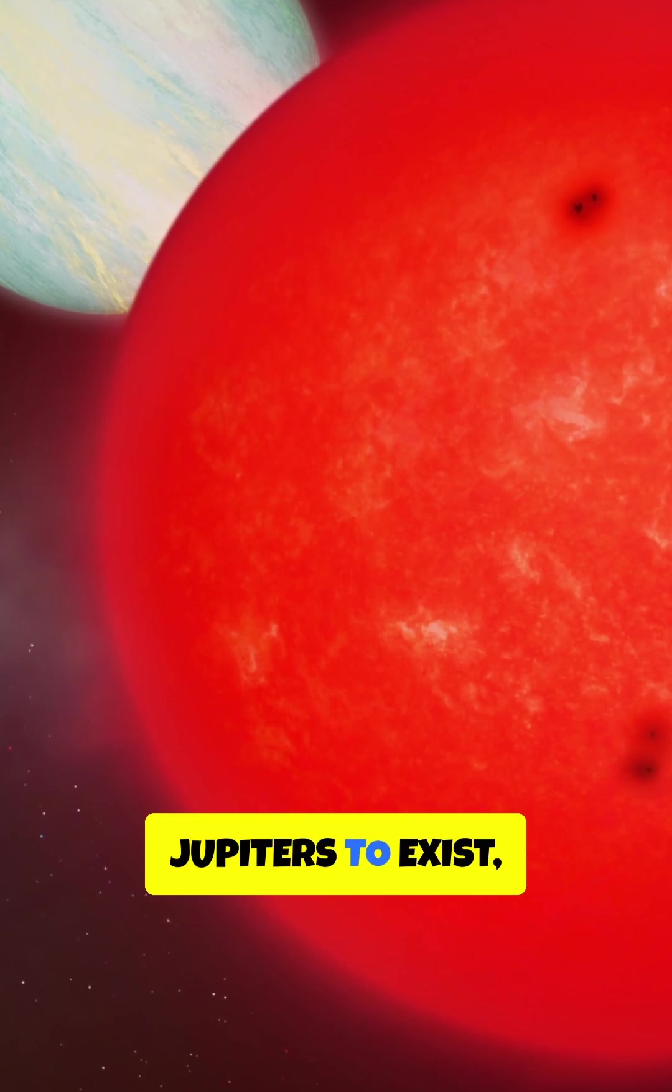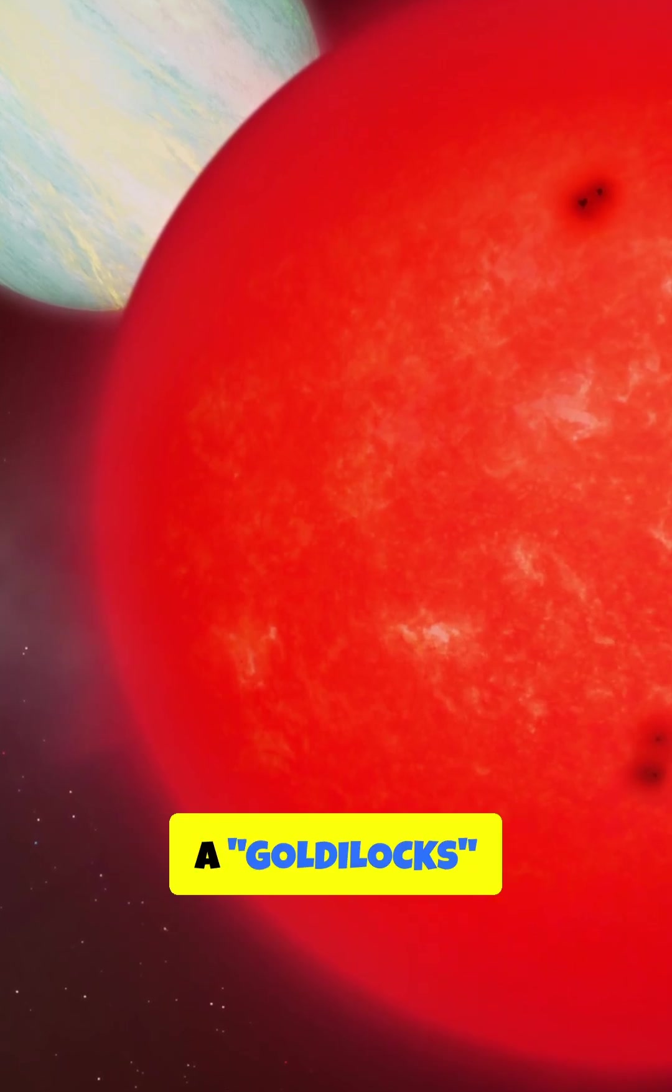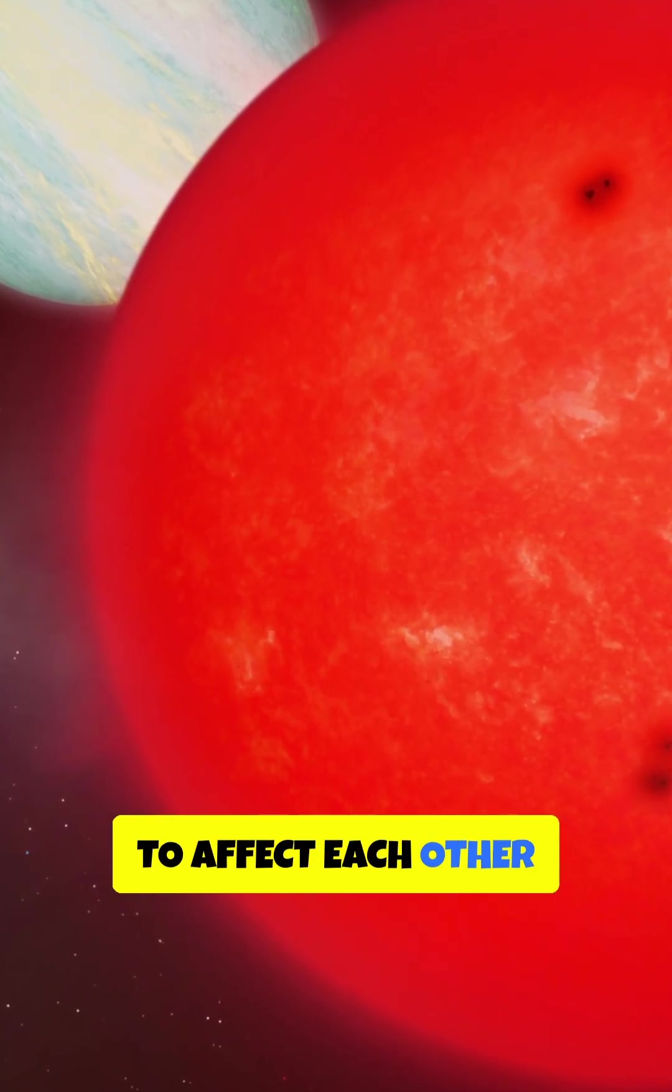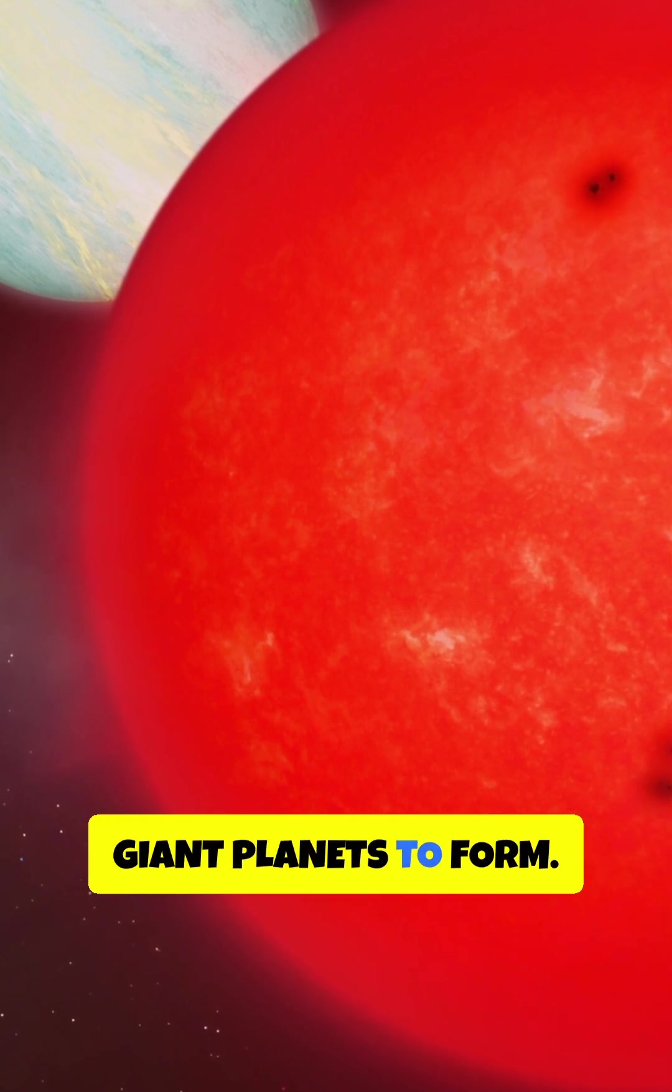For double-hot Jupiters to exist, the stars must be at a Goldilocks distance, close enough to affect each other, but far enough for giant planets to form.